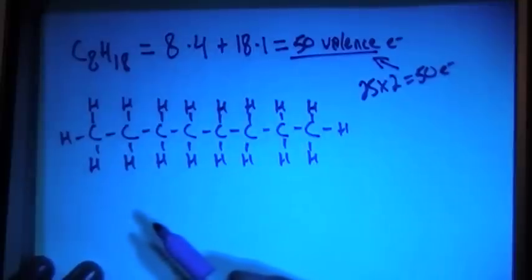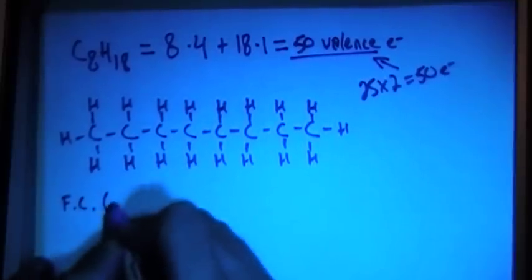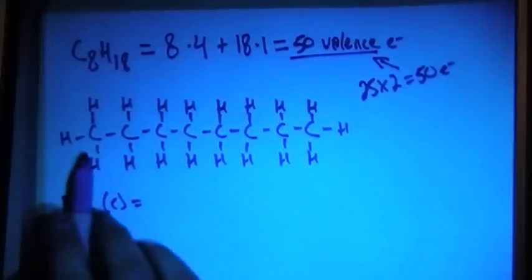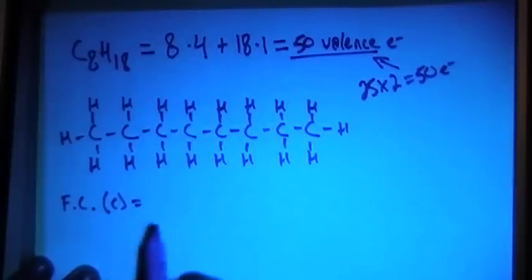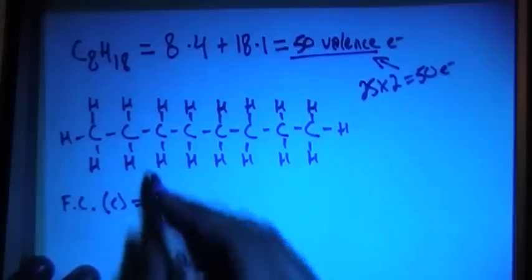So, let's go ahead and check the formal charges to verify. Formal charges on the carbon. And notice, every carbon in here has 4 bonds. That means that the formal charges on one carbon is going to be equal to the formal charges on every carbon in this drawing, in this structure.